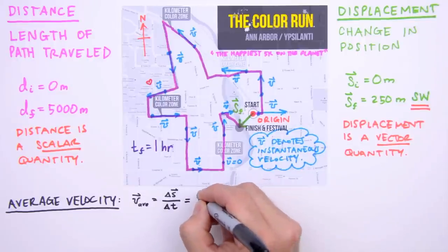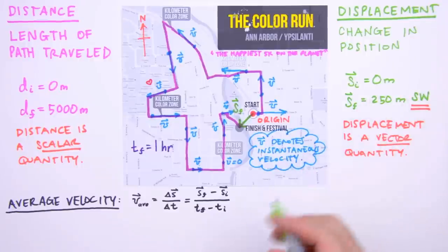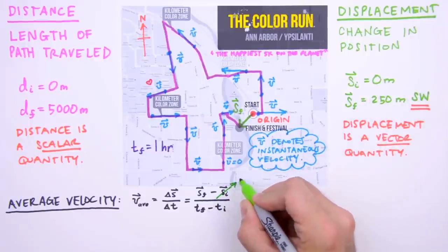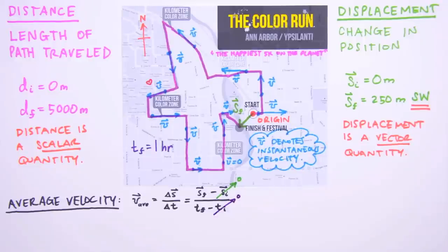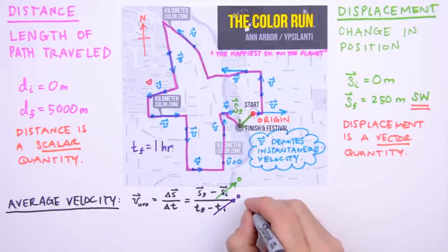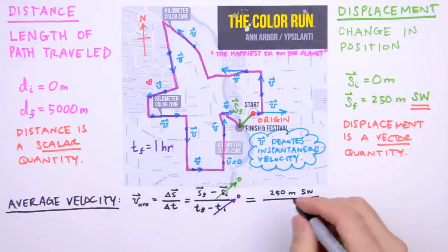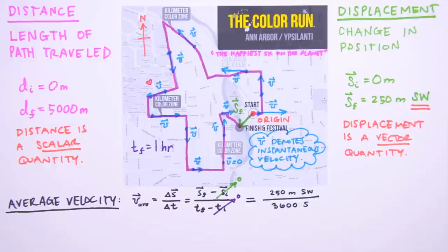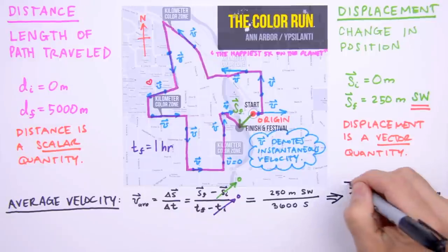Expanding, we get S sub f minus S sub i over t sub f minus t sub i. Here the initial displacement is zero, so we can set this value to zero. And almost always the clock starts at zero — implied by our final time of one hour — so we can set t sub i to zero. Now we'll insert our values for S sub f and t sub f: for S sub f we have 250 meters southwest — don't forget the direction — and we'll convert one hour to 3,600 seconds for t sub f. This puts our velocity in the preferred SI units, giving our runner's average velocity as 0.07 meters per second southwest.